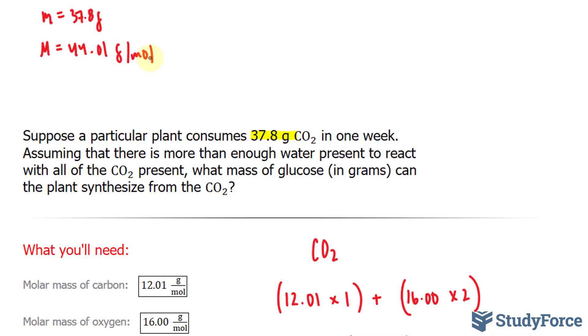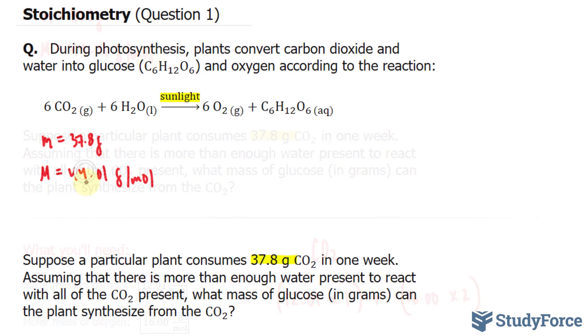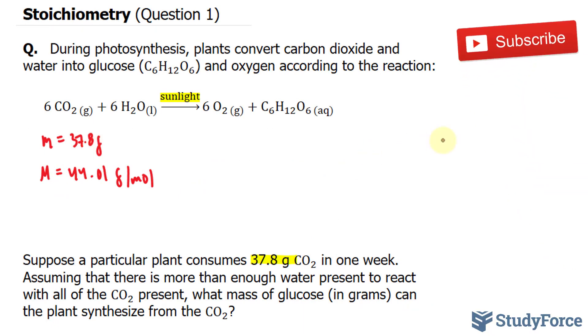Once you've found your molar mass, you want to somehow multiply these two numbers so that you end up with the number of moles. And you can do that quite easily by taking 37.8 grams and multiplying it by the flipped version of this number. Notice that in this version, we have 44.01 grams at the top and 1 mole at the bottom. Instead, I'll put 1 mole at the top and 44.01 grams at the bottom.